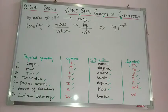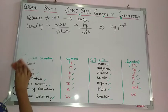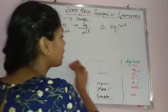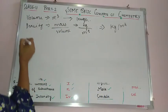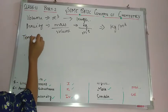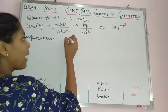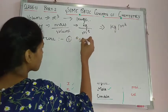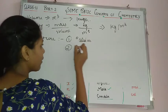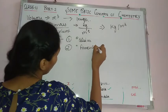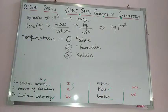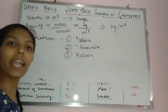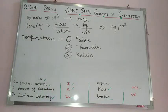Now let's talk about temperature. The SI unit of temperature is Kelvin, but temperature is mainly measured in three units: degree Celsius, degree Fahrenheit, and Kelvin. Note that Kelvin does not have the word 'degree' with it — degree is only used with Celsius and Fahrenheit, never with Kelvin.